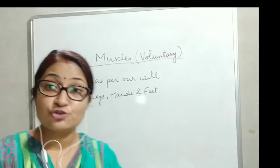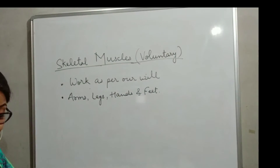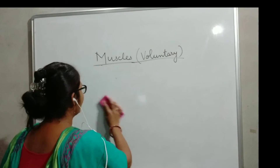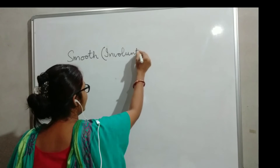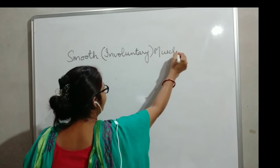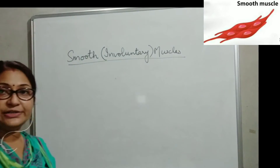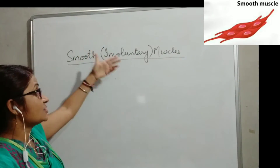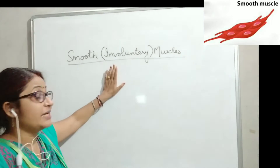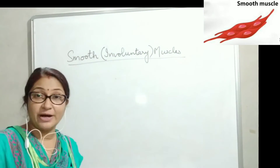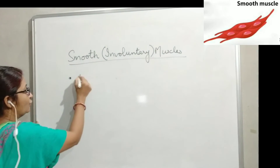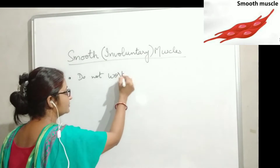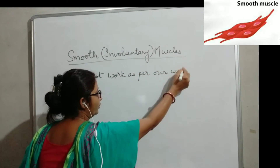Let's come to the second type of muscles — that is the smooth muscle. Smooth muscles are also called involuntary muscles, just the opposite of voluntary muscles. These will not work as per our will; they work on their own. Those muscles do not work as per our wishes.